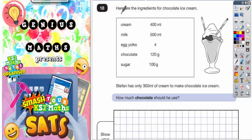Question 18: Here are the ingredients for chocolate ice cream. Cream 400 milliliters, milk 500 milliliters, egg yolks 4, chocolate 120 grams, sugar 100 grams. Stefan only has 300 milliliters of cream to make chocolate ice cream.